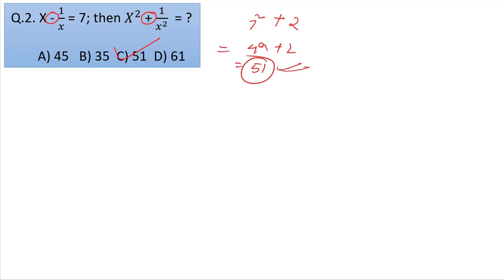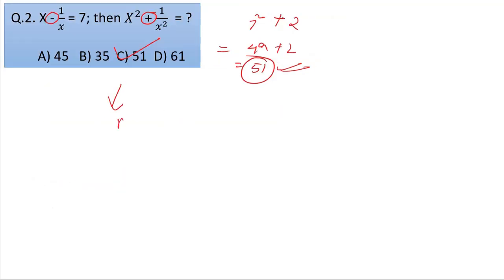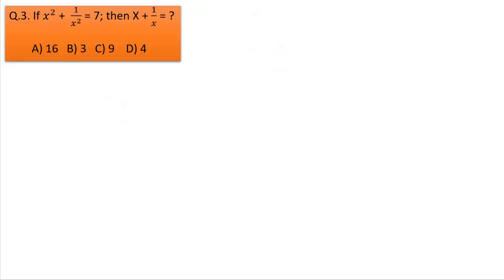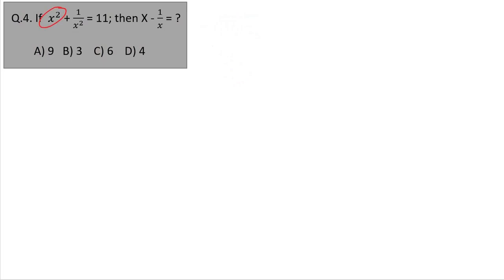Question number three: x squared plus 1 by x squared equal to 7. We need to find x plus 1 by x. Working it out — taking root over 7 plus 2, root over 9, answer is 3. Option number B.